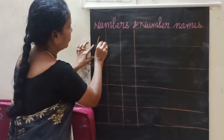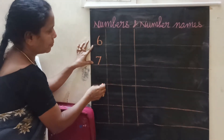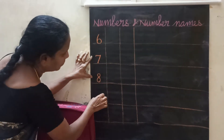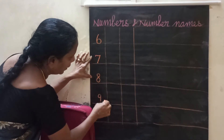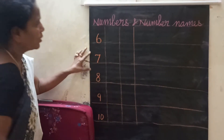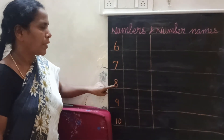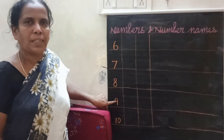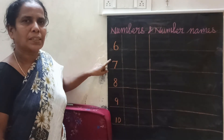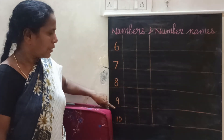7, 8, 9, 10. And once again, 6, 7, 8, 9, 10. 6, 7, 8, 9, 10.